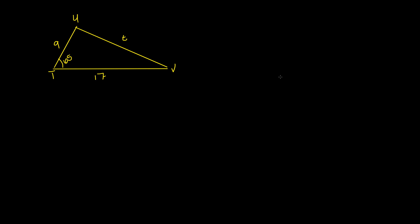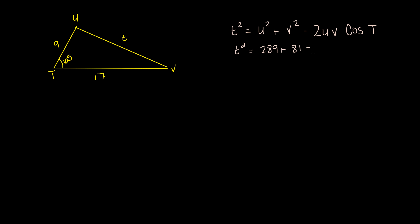There's another way I could find t — I could use the law of cosines. In this case I'm going to do: t squared equals u squared plus v squared minus 2uv cosine of capital T. So: t squared equals 17 squared, which is 289, plus 9 squared, which is 81, minus 2 times 17 times 9, which is 306, times cosine of 65 degrees.